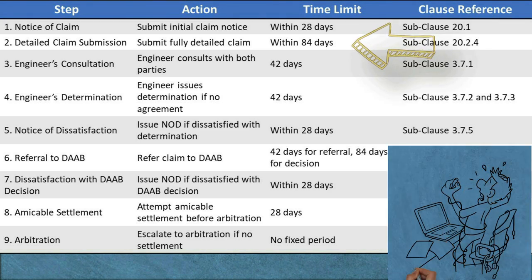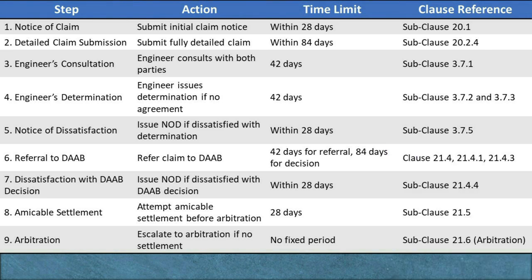Time limit: The fully detailed claim must be submitted within 84 days from the date on which the claiming party became aware, or should have become aware, of the event or circumstance that gave rise to the claim. The 84-day period may be extended by mutual agreement between the claiming party and the engineer, allowing flexibility if needed. Clause Reference: Subclause 20.2.4 — Fully Detailed Claim. If the claiming party fails to submit within this 84-day period, or any extended period mutually agreed upon, the initial notice of claim lapses and becomes invalid.